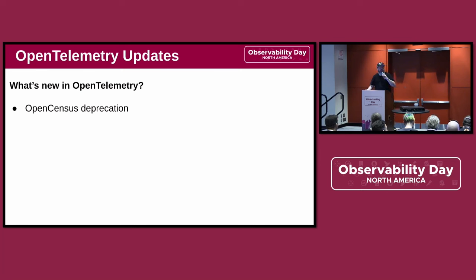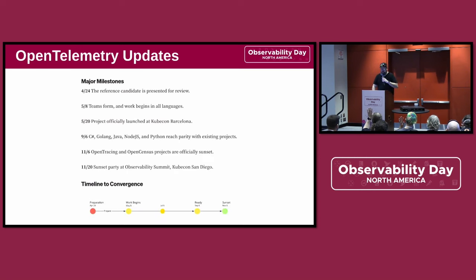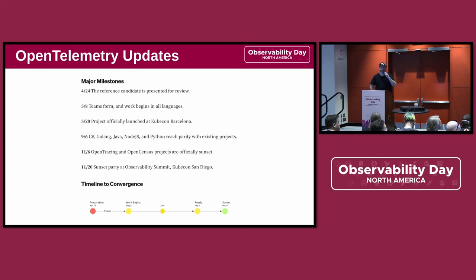Another important thing that happened this year is that OpenCensus was deprecated. I want people to think back to a couple of years ago, before the pandemic — there was a KubeCon in San Diego. Who had heard of OpenTelemetry in 2019? Did you hear about OpenTelemetry through a blog post with this section? This was our initial plan published on the OpenTracing and OpenCensus blogs, and these were our major milestones in 2019.